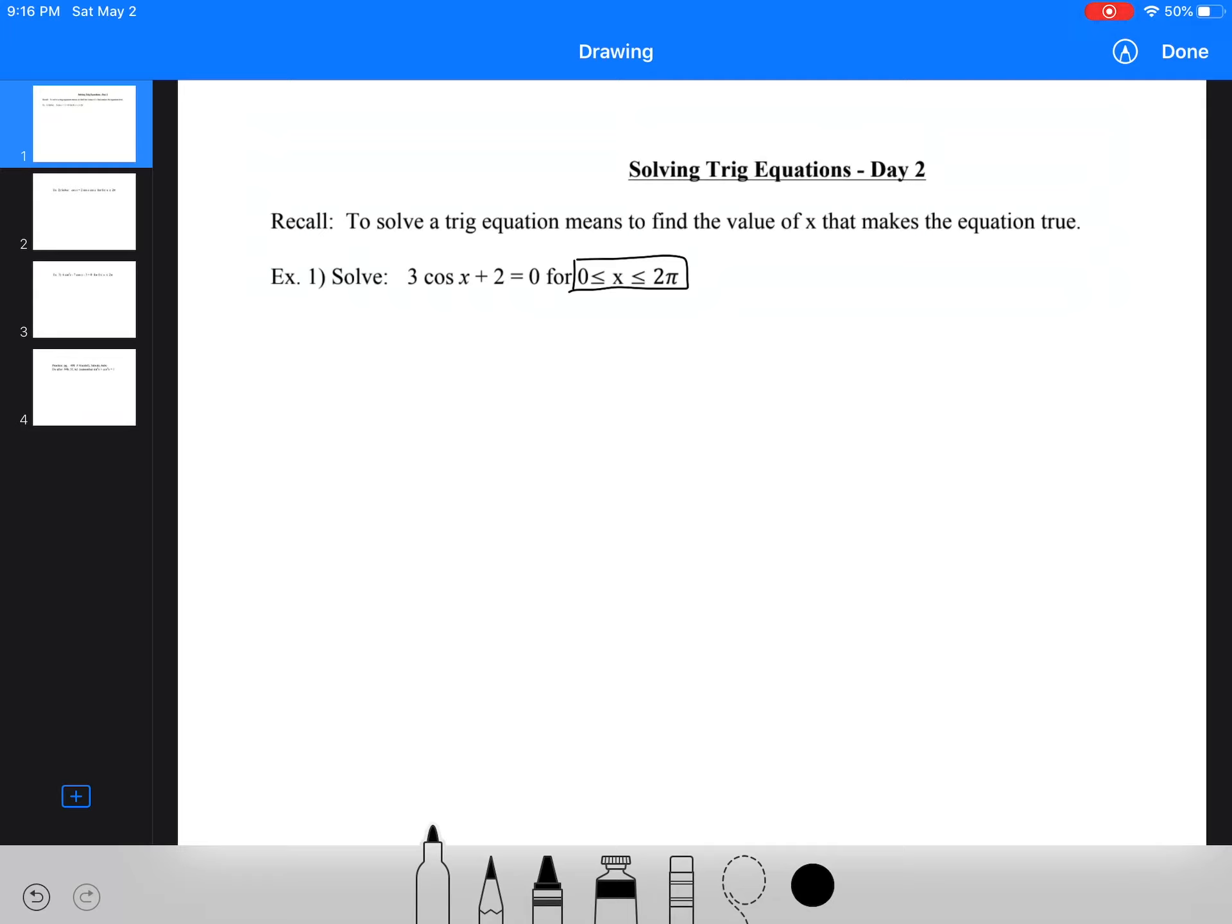So the first step here, we're going to be doing cos x, and I'm going to move the two to the other side, and then I'm going to divide by three. So now we need to think back. So we've got cos x is equal to all that.